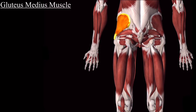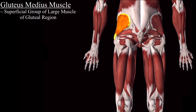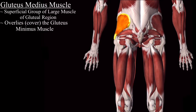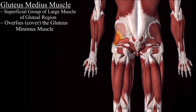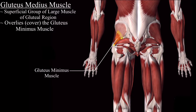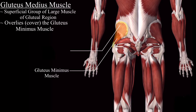The gluteus medius muscle is also one of the superficial group of large muscles of the gluteal region. This muscle overlies the gluteus minimus muscle. As you can see, this is the gluteus minimus muscle present under the gluteus medius muscle.